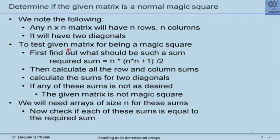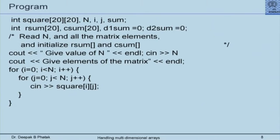To write a program to test whether a matrix is a magic square, we calculate all row and column sums and the sums of the two diagonals. If any of these sums is not equal to the required value n×(n×(n+1)/2), then the square is not a magic square. If all sums are equal, then it is a magic square. The program design comprises reading an array of size n, then checking if each sum equals the required sum.